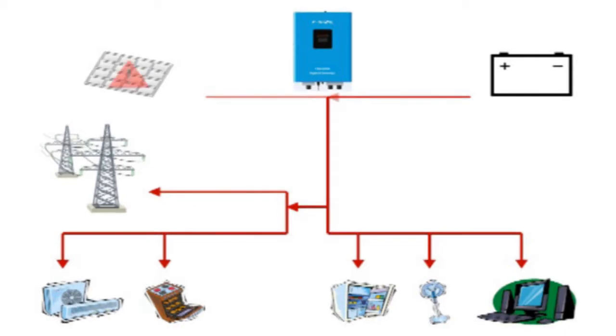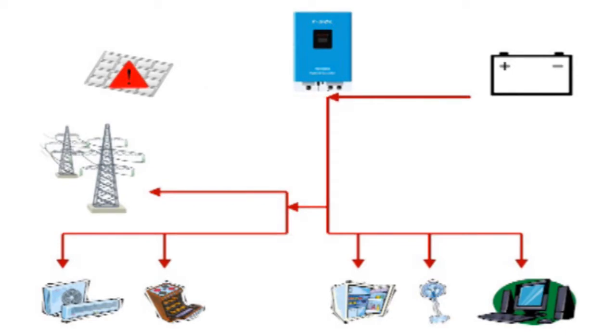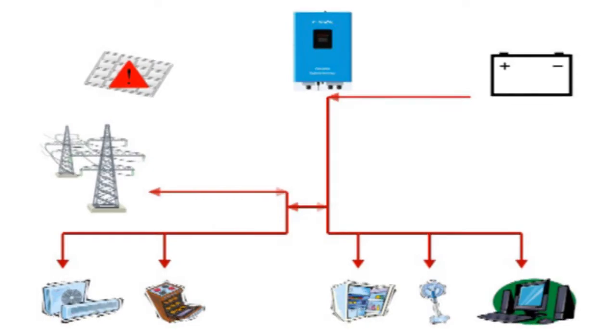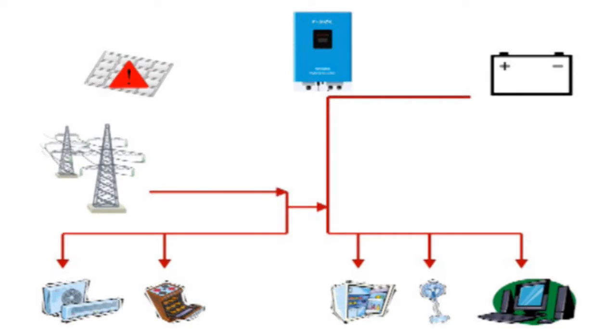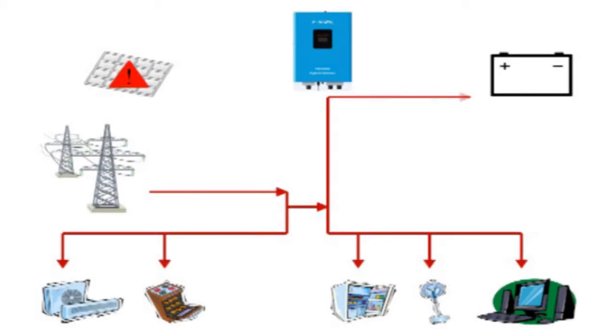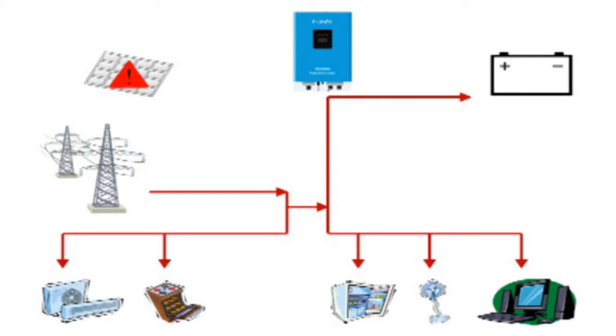When the sun goes down, the solar panels will stop generating power and the inverter will now use the batteries. Before the batteries became empty, the inverter will now get power directly from the grid. If you have an optional AC charging module, the inverter will energize the AC charger to charge the batteries.